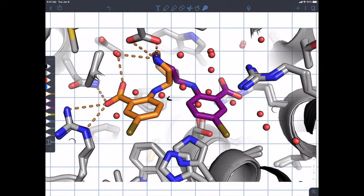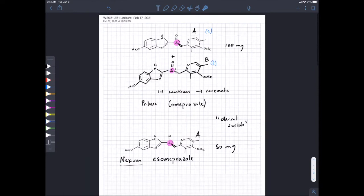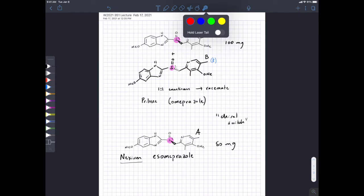And you can see how that could translate into different function. One enantiomer might bind to a receptor really well. The other enantiomer might not. The basic principle is two enantiomers don't have to do the same thing in biological contexts. There are molecules that are enantiomers that actually smell differently. Why is that? Because your nose is chiral and can sense molecules that are enantiomers differently.